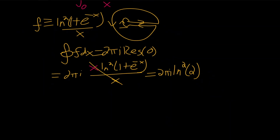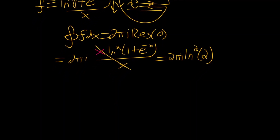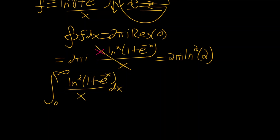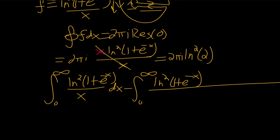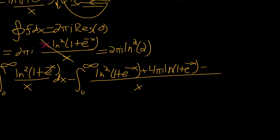Now evaluating the contour integral piece by piece: the outer arc goes to 0. For the remaining pieces along the branch cuts, we can write the contour integral as the integral from 0 to infinity of natural log squared of 1 plus e to the minus x over x dx, minus the integral from 0 to infinity of the natural log squared of 1 plus e to the minus x over x plus 4πi times the natural log of 1 plus e to the minus x minus 4π squared, all over x, dx.